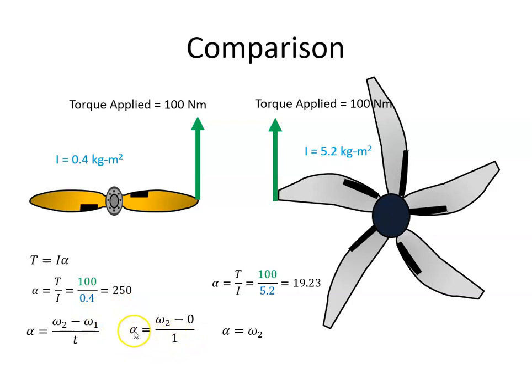That means after one second, if we applied 100 Newton meters, the angular velocity of this propeller will be 250 radians per second or 2387 revs per minute.